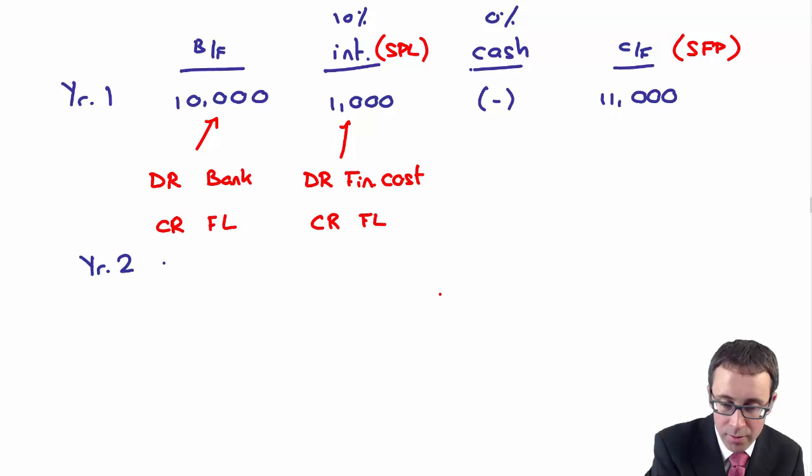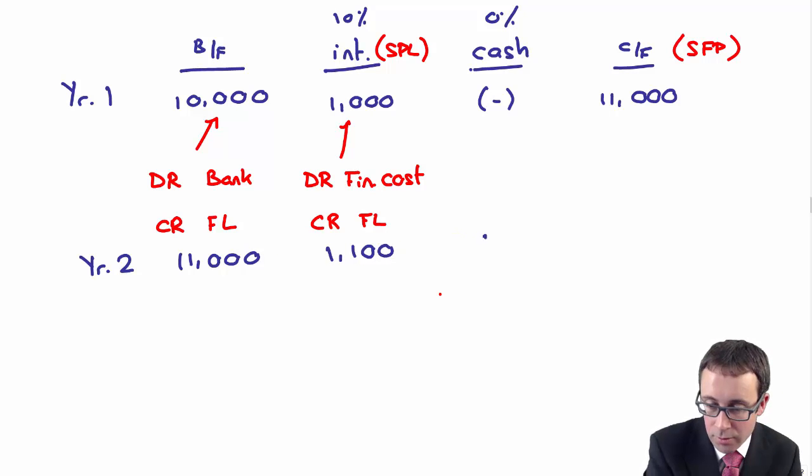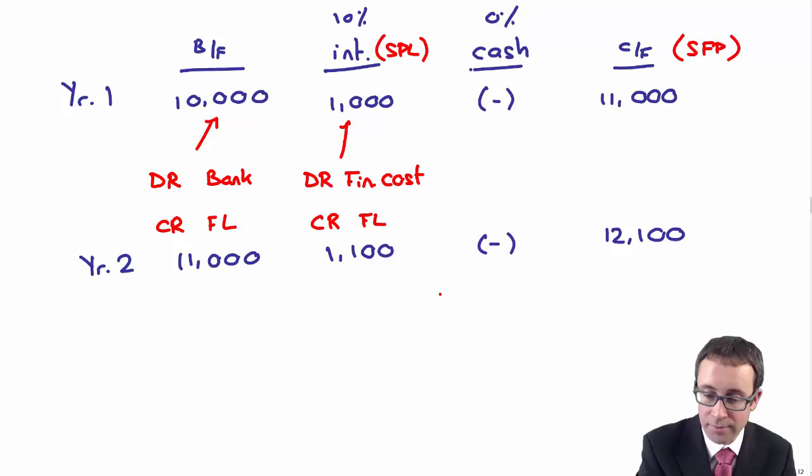Year two, I start off with $11,000. 10% is $1,100. No cash, which gives me $12,100.